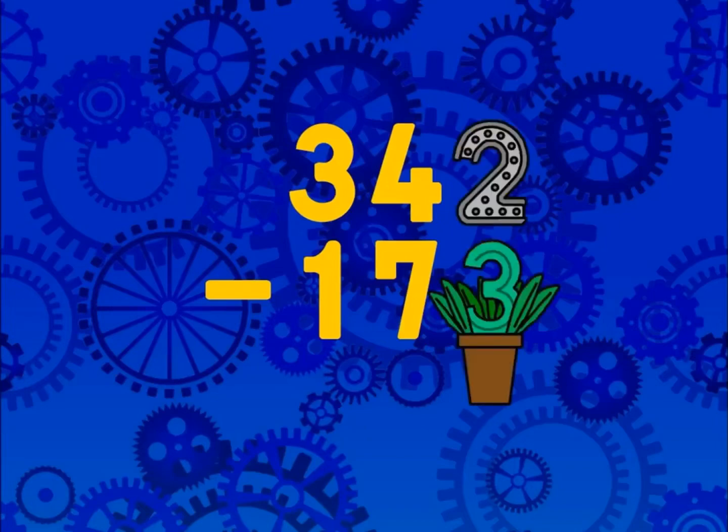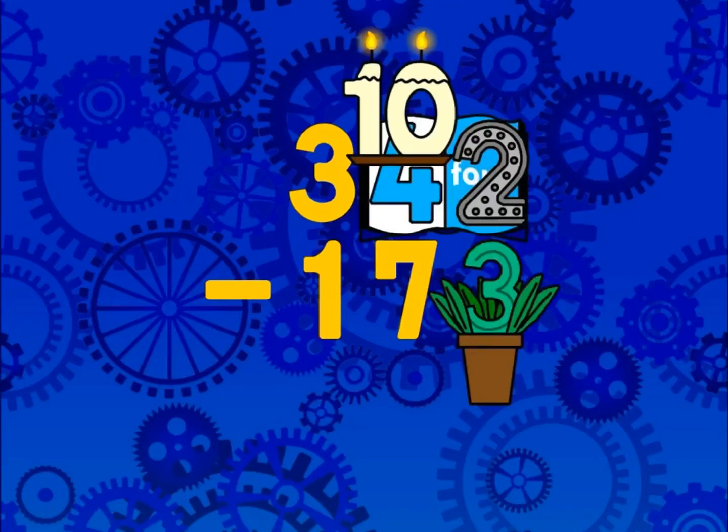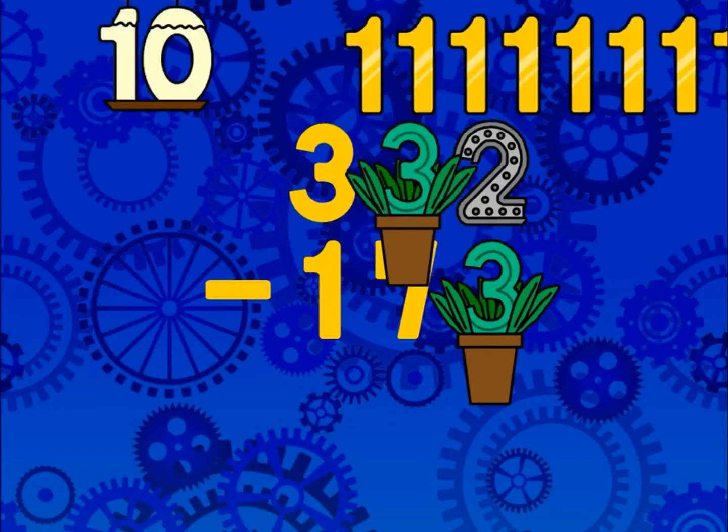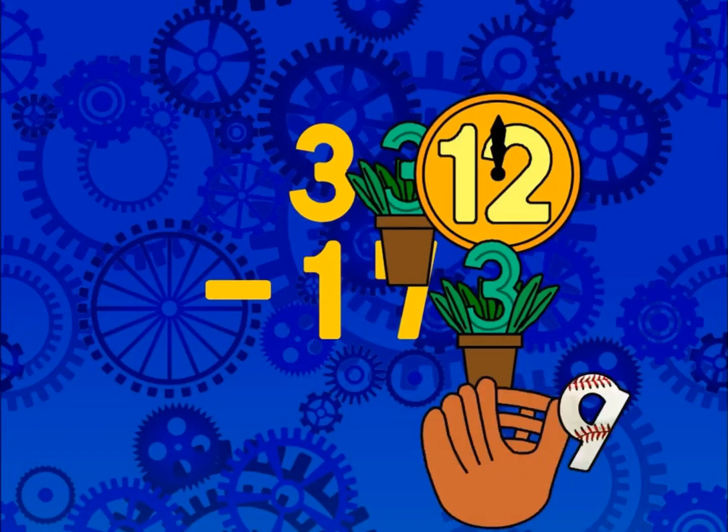You can't take 3 from 2. 2 is less than 3, so you look at the 4 in the tens place. Now, that's really 4 tens, so you make it 3 tens, regroup, and you change the 10 to 10 ones, and you add them to the 2 and get 12, and you take away 3. That's 9.